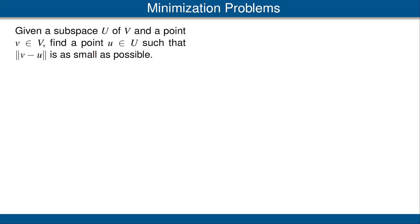The following important minimization problem arises frequently. Given a subspace U of V and a point v in the vector space V, find a point u in our subspace U such that the norm of v minus u is as small as possible. In other words, find the point in the vector space U that's as close as possible to v.